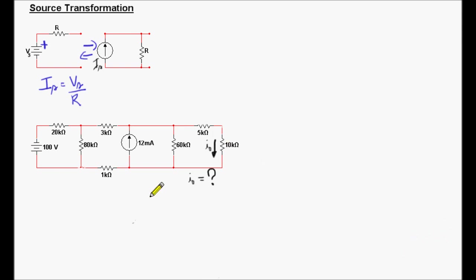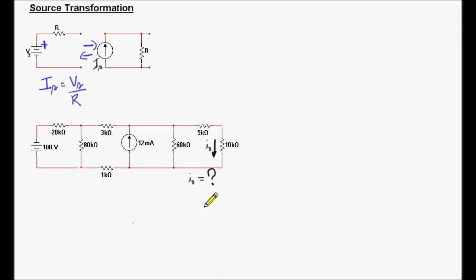Let's look at our circuit. The first thing we have to look at in the circuit is the variable that we are trying to find. If the variable we are trying to find is right here on the right side, we have to preserve this branch, so we cannot touch this part of the circuit. We have to work someplace else and try to get as close as we can to this branch without changing it, so we can calculate the current I sub zero in the end.